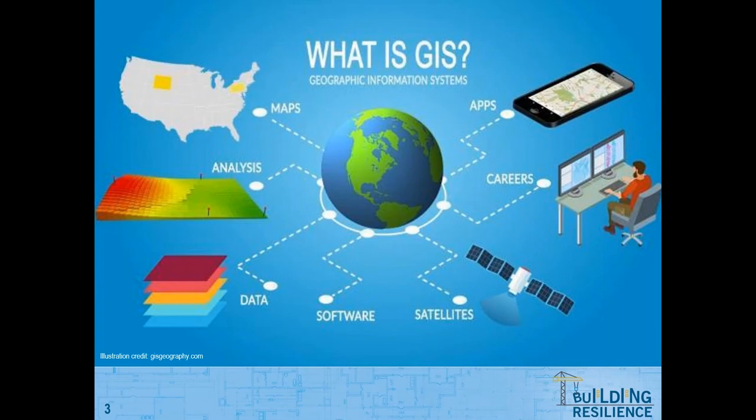I'll start by generally covering at a high level what GIS is. GIS stands for Geographic Information Systems and is a digital tool that examines spatial relationships, patterns, and trends in geography. Data itself, without spatial reference, really doesn't provide as much value as it does when there's a geographic context. Without geographic context, it's hard to keep up with the world that we live in today. GIS technology is really pervasive.